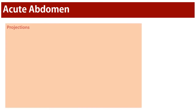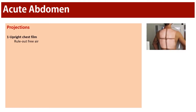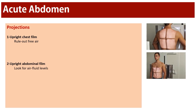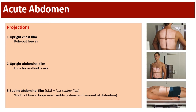The acute abdomen series consists of three projections, though this may depend on the department's routine. Typically we perform: first, a chest PA upright to rule out free air under the diaphragm — chest technique best visualizes small amounts of free air. Second, an upright abdomen x-ray to look for free air and air-fluid levels, especially in cases of obstruction. Third, a supine or KUB film to evaluate the width of bowel loops and estimate the amount of distension.